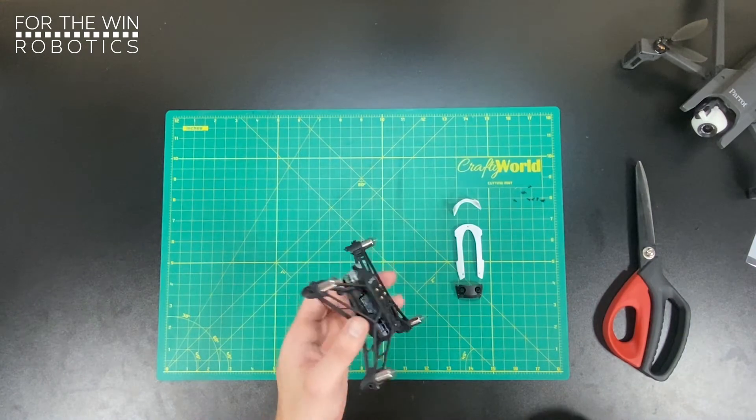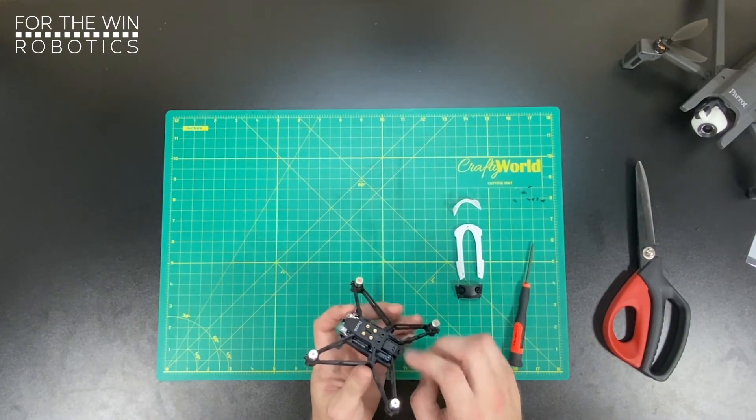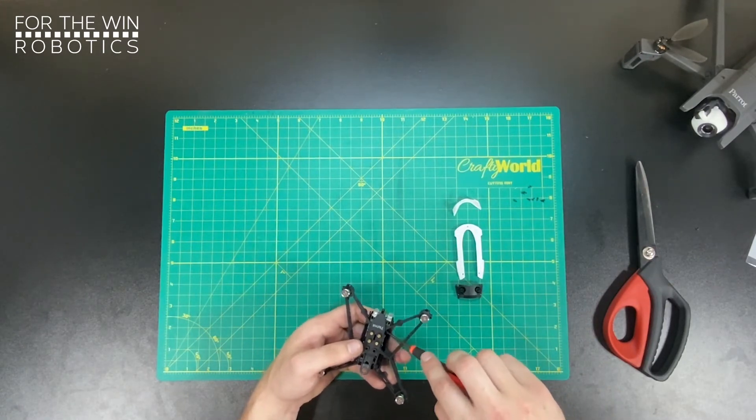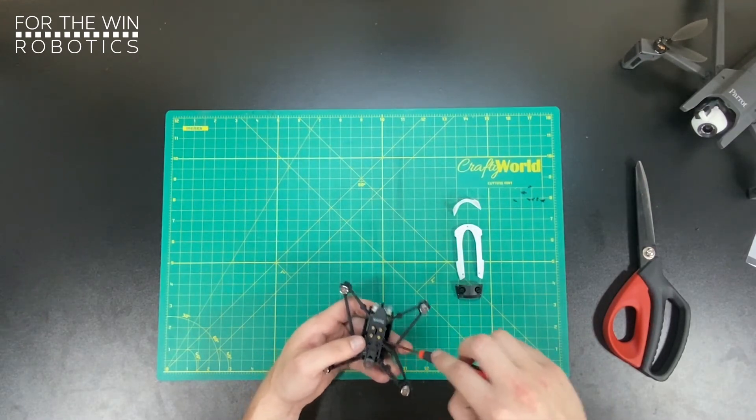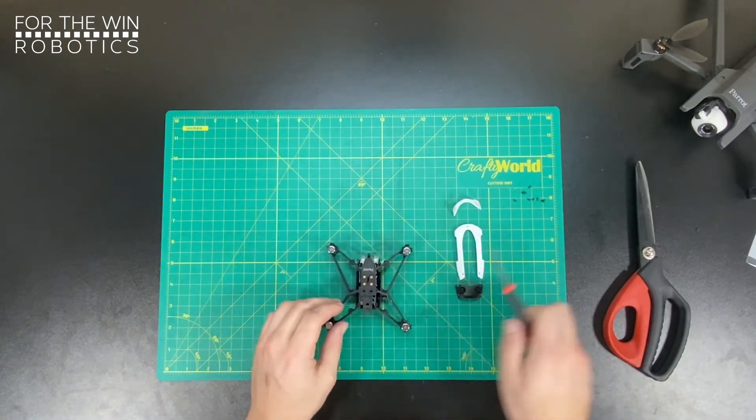Alright, so now our PCB and cover are both secure. I'm going to straighten out this little plastic piece inside the frame. Alright, there we go.